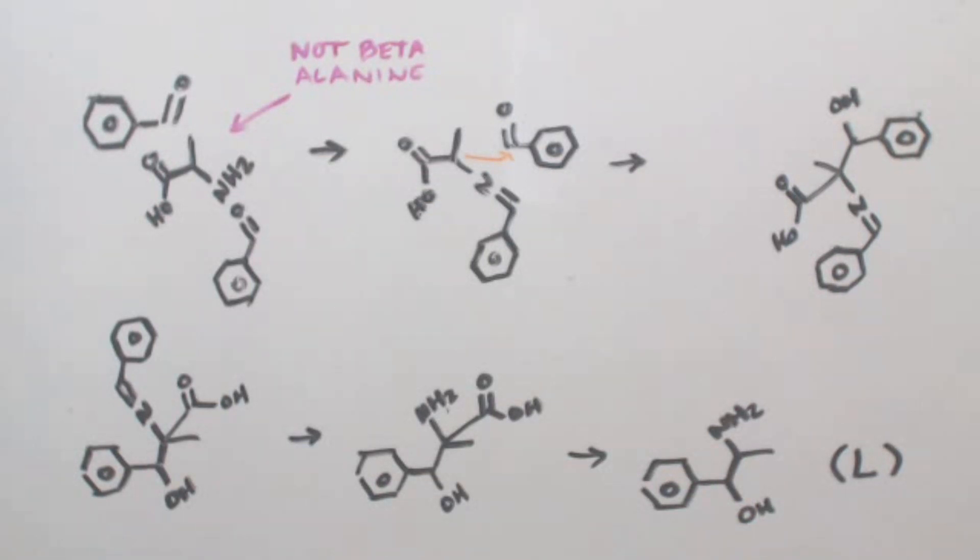You can see a picture right here - you take off the hydroxy group and that's amphetamine. So sometimes they call this beta-hydroxyamphetamine because you have that hydroxy group on there.